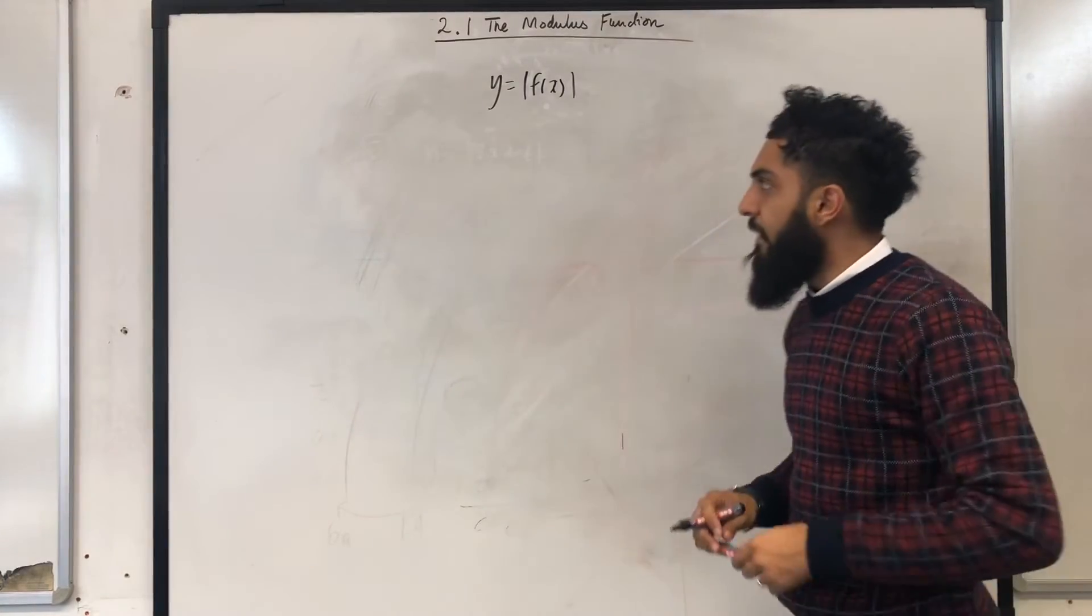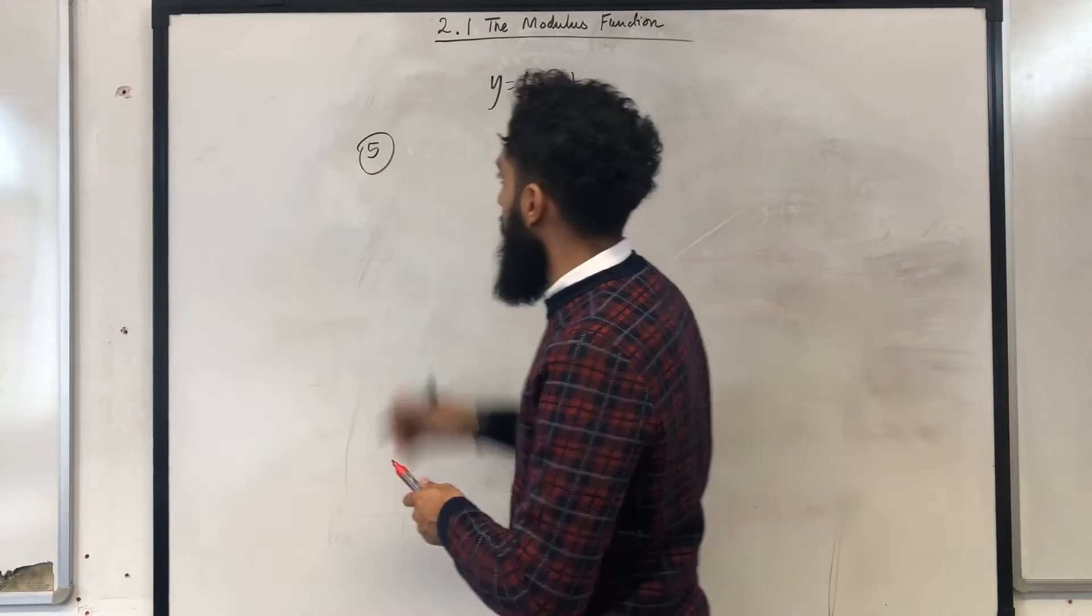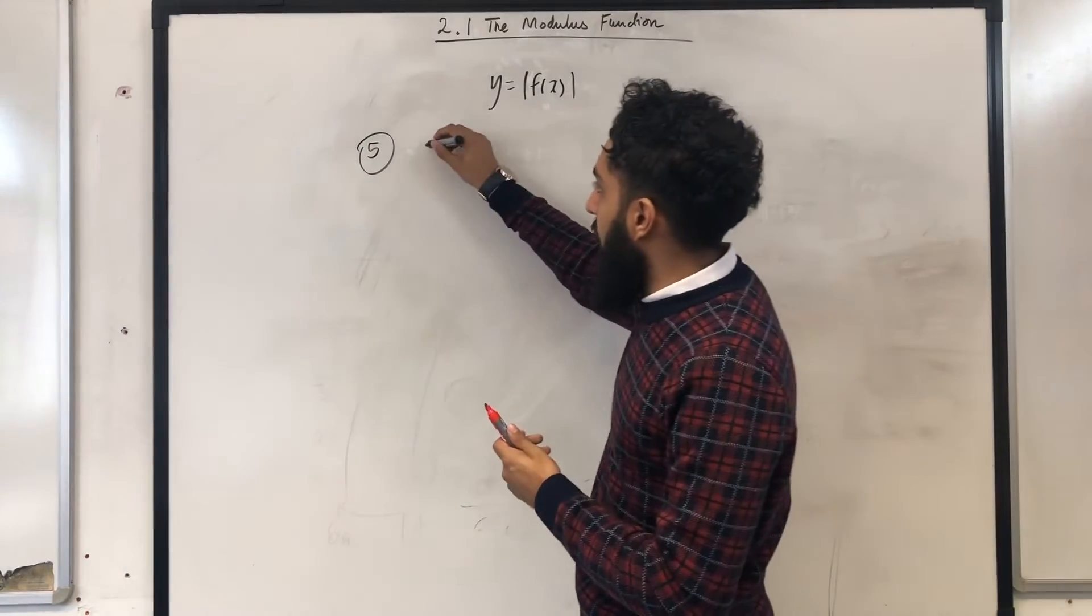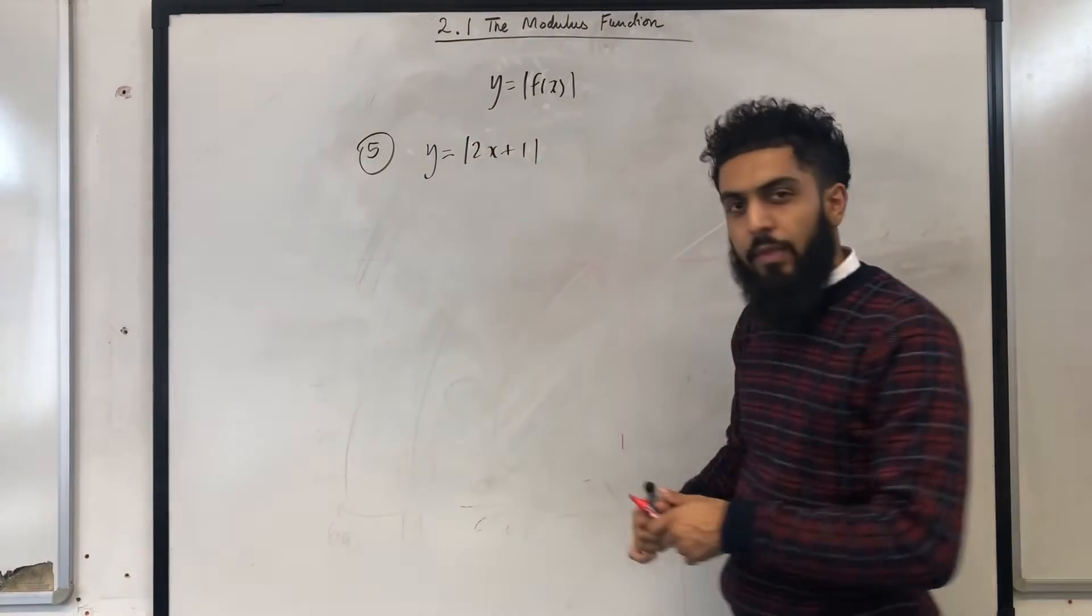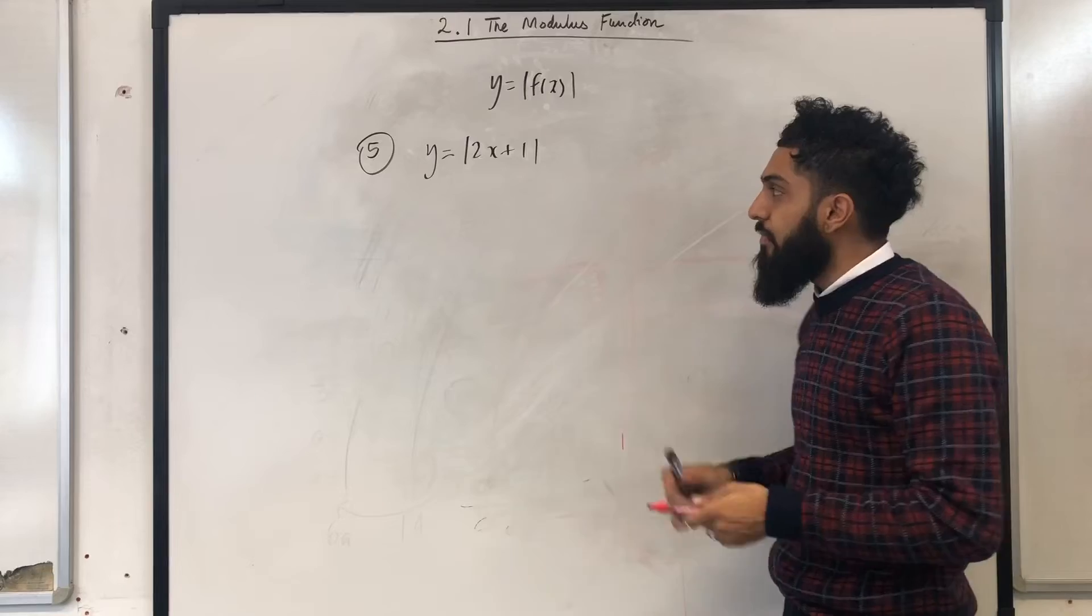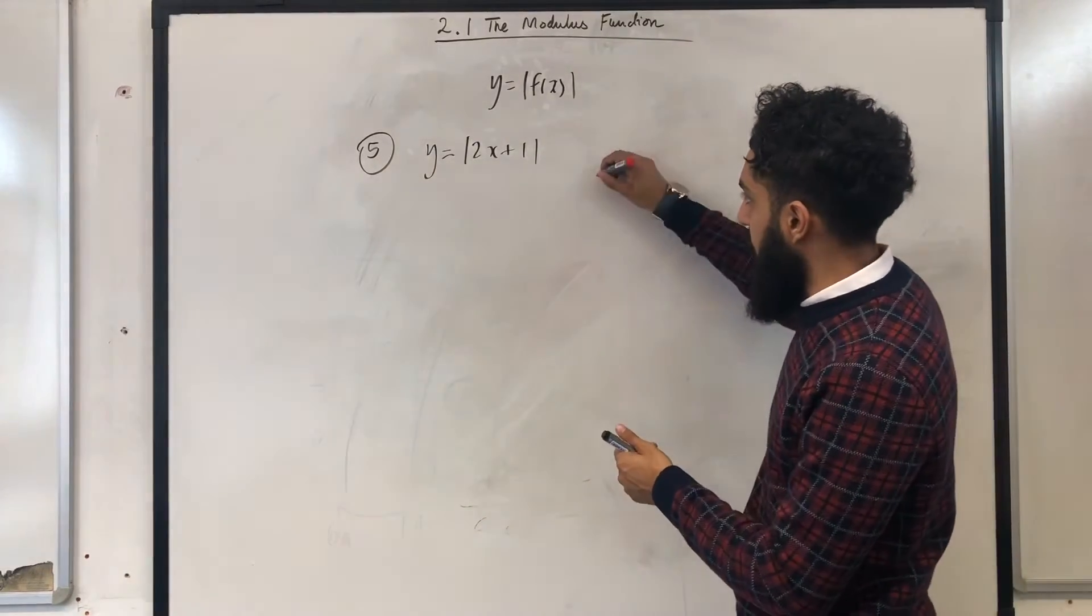Let's go through example number 5 now. I want to sketch this beautiful graph which is y equal to the modulus of 2x plus 1. First of all you need to draw your coordinate grid here. So you first draw your coordinate grid, which I'm going to do now.